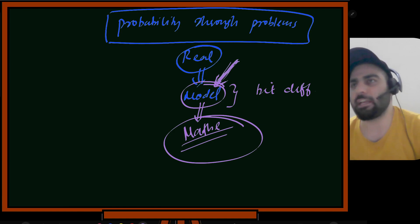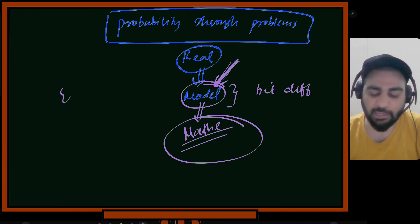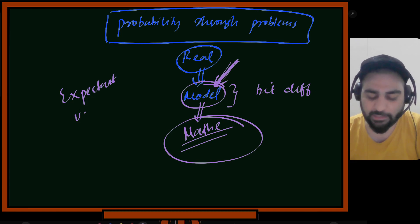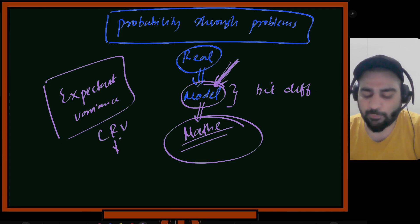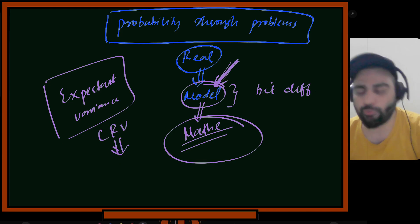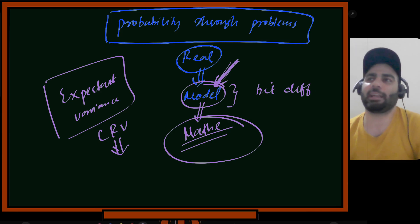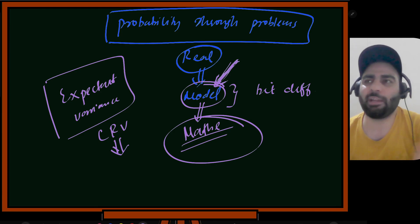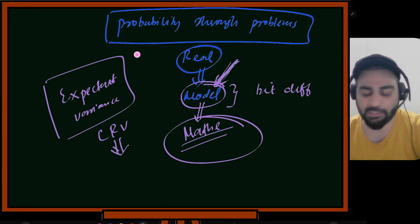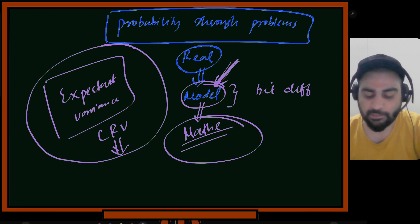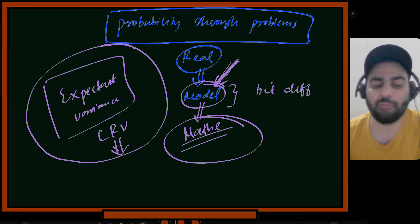In the next class, we'll study expectations and variance in detail, then move on to continuous random variables, their distributions, and then topics like joint probability, marginal probability, and different inequalities. If you have any questions, I'm happy to take them.